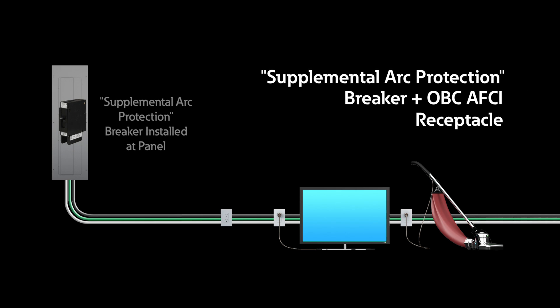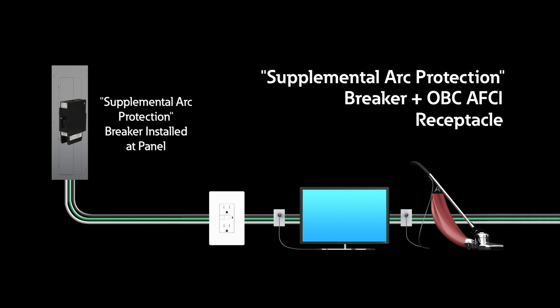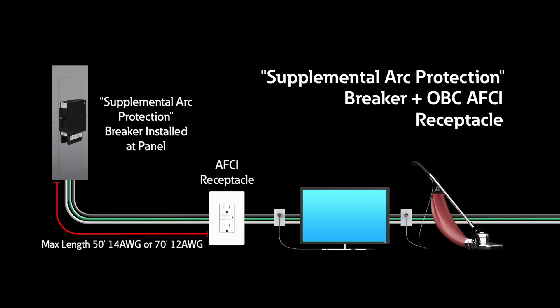Supplemental arc protection breaker with an OBC AFCI receptacle. This method allows for a listed supplemental arc protection circuit breaker to be installed at the origin of the branch circuit in combination with a listed AFCI receptacle installed at the first outlet box on the branch circuit. While this allows for local reset capabilities, supplemental arc protection breakers are not currently available. Additionally, there are limitations in the home run length and the circuit must be continuous.